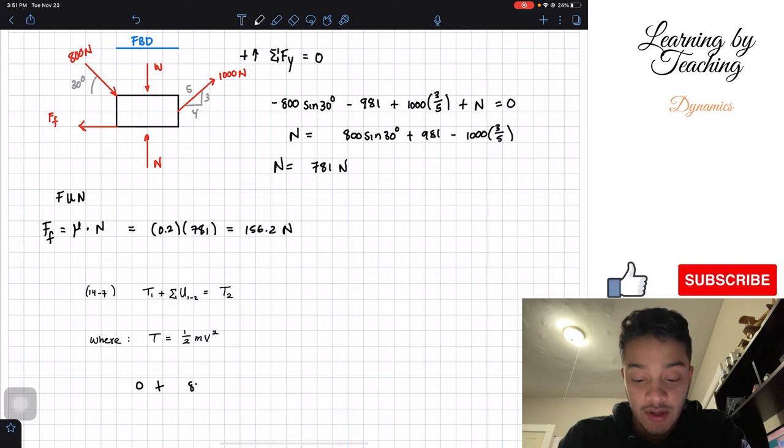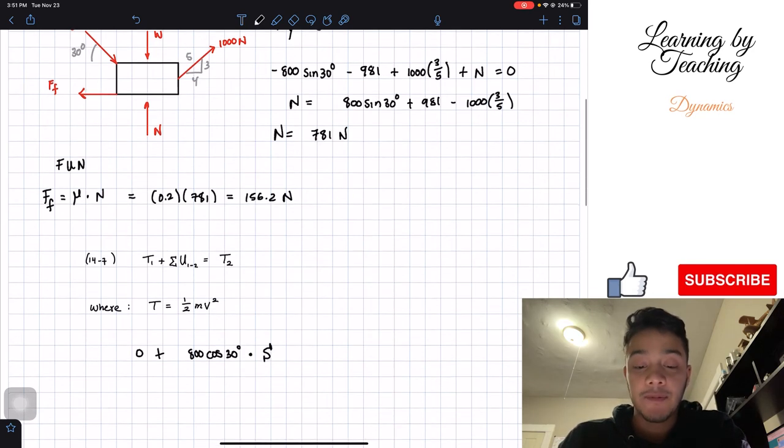So let's just start with the work, and we're looking for the work that is to my right. So we're looking for forces times the distance that are going in this direction. Therefore, first, we're going to have 800 cosine of 30 degrees times the distance. Well, the distance is what we're trying to find. Therefore, I'm going to put it as S.